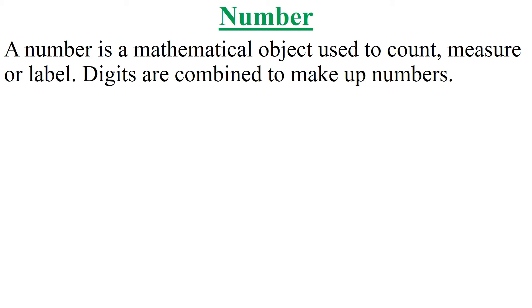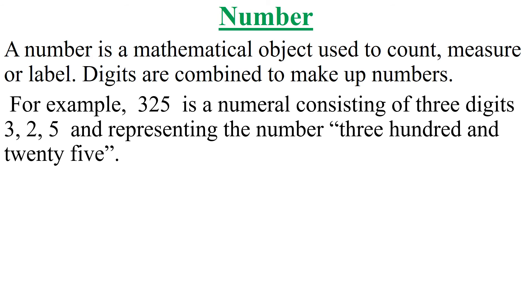Digits are also combined to make up numerals, and these numerals when given an idea make up numbers. Number is used to count, measure, or label. For example, 325 is a numeral consisting of 3 digits: 3, 2, and 5, and representing the number 325.